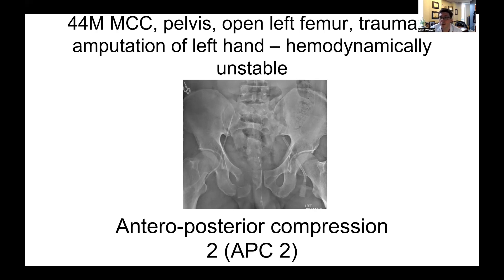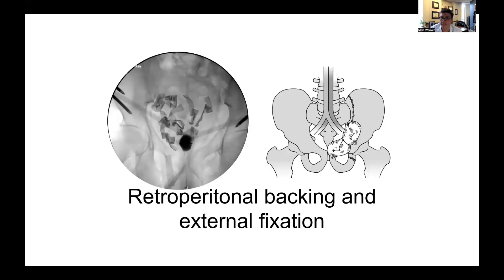He was brought to the operating room for external fixation. You can see the external fixator pins, and the volume of the pelvis has now been reduced — it's a near-anatomic reduction of the anterior pelvic ring, with still some slight gapping of the sacroiliac joints posteriorly. You can see the retroperitoneal packs from the lap pads, placed deep inside the true pelvis against the quadrilateral plate — not on top, but deep inside. This was our initial damage control setup.